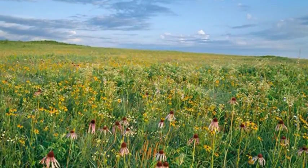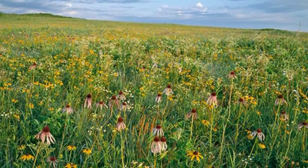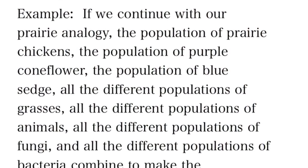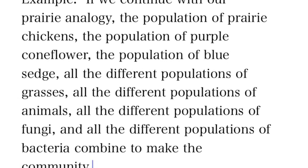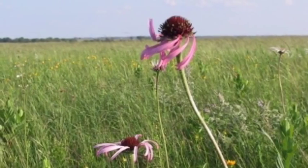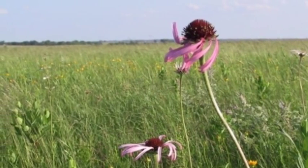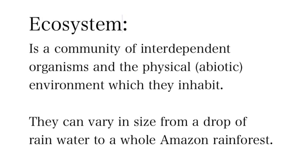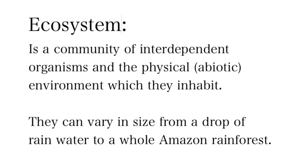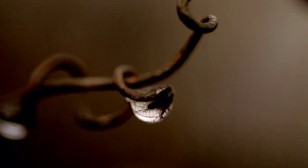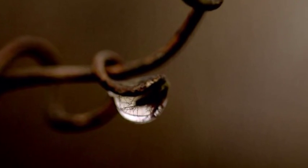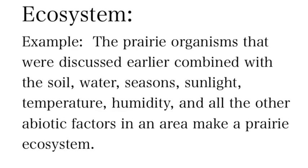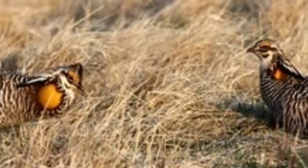A community is a group of all the different populations that live in one area. So if we look at a prairie, you've got the prairie chickens, the coneflowers, the blue sedge grass — all the grasses, flowers, plants, animals, bacteria, and fungi come together to make that community. An ecosystem is really all of the different communities of the same type found in an area.